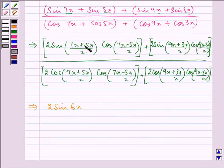Now, why 6x? 7x plus 5x will give us 12x and 12x divided by 2 will be 6x. Here, 7x minus 5x will be 2x and 2x divided by 2 will be given as x.